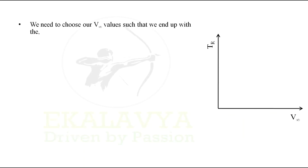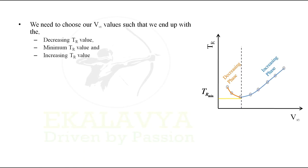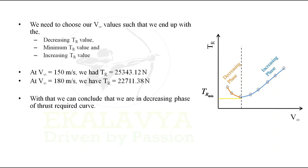We need to choose our V∞ values such that we end up with the decreasing thrust required value, the minimum thrust required value, and the increasing thrust required value. At velocity 150 m/s, we have thrust required as 25343.12 N. At velocity 180 m/s, we have thrust required as 22711.38 N. With that we conclude that we are in the decreasing phase of thrust required curve.